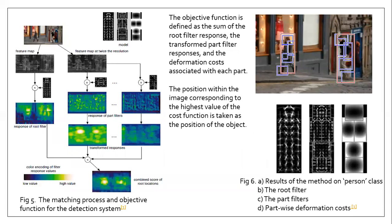This is a summary of what we have discussed. Here you can see an image containing two persons. The object detector is going to detect these two persons and the corresponding parts, including head, shoulder, and legs. The image is fed into the object detector, which first calculates the feature map using the variant of HOG — the Histogram of Oriented Gradients — at various resolutions, forming feature pyramids.